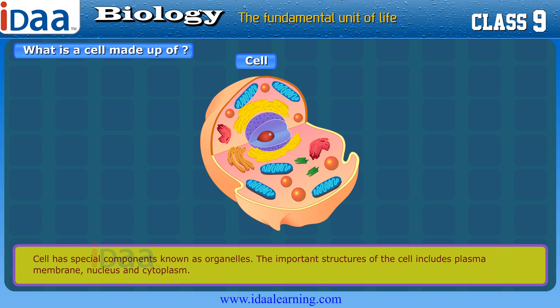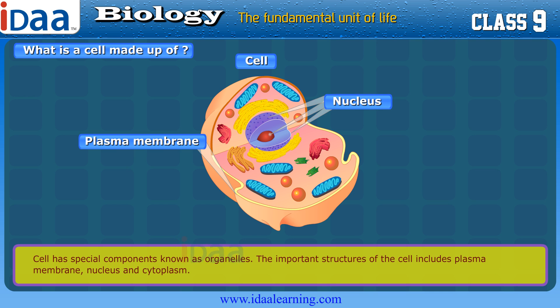What is a cell made up of? A cell has special components known as organelles. The important structures of the cell include the plasma membrane, nucleus, and cytoplasm.